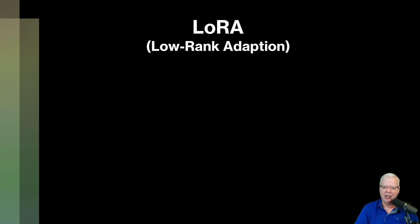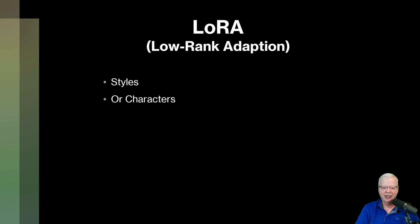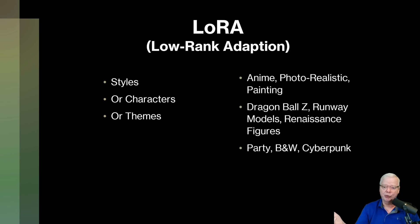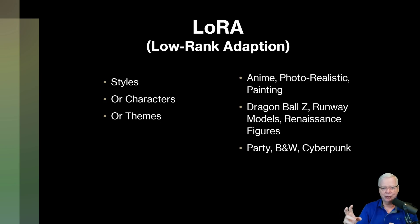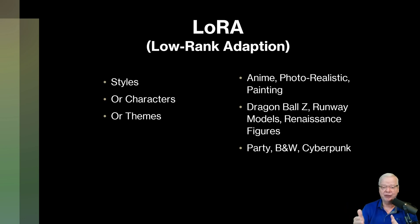Next, we have LoRA, or low-rank adaptation. A LoRA is a controller — it basically controls your image in certain ways. It can control the style of the image, the type of character, or the theme. For example, if you're creating an anime or photorealistic image, or you want cyberpunk or black and white effects, LoRAs can control what the image does. LoRAs are an add-on to your model that run alongside it, and you can turn them on or off. This gives you much more flexibility to try different LoRAs without affecting your overall model.